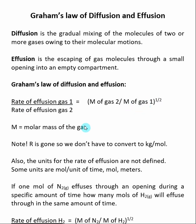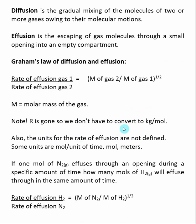Using this, we can compare diffusion and effusion of two different gases. So if we have information about one gas, we can calculate information about the second gas. So here, M is molar mass of the gases, and in this case, we do not need to convert to kilograms per mole, and that's because R is not involved in this equation.